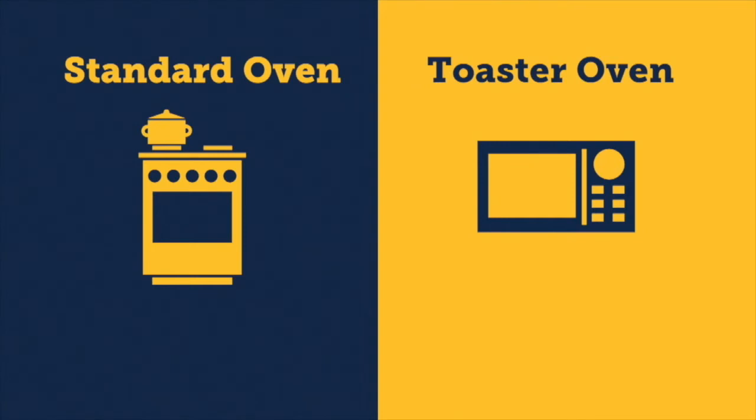Using the toaster oven, it costs 1.5 cents to bake the pizzas. Using the oven, it costs 11 cents. That's seven times more expensive. And even though it may not seem like a big difference for one use, think about how much it's going to be over the long term.